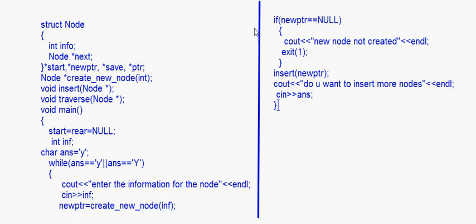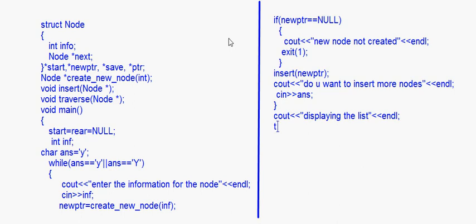Once the user says they don't want to continue, they come out of the while loop. After the while loop, I write cout 'Displaying the list', then call the traverse function passing the address of start, because we have to start from the first node — start contains the address of the first node.